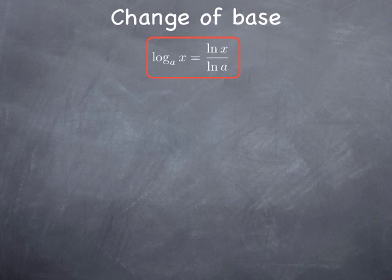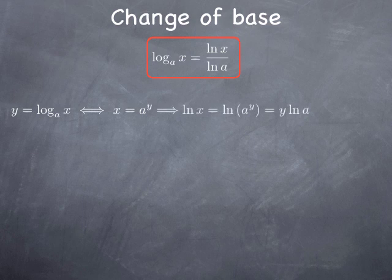Let me try to justify this. Let's start with the expression that y is the log of base a of x. What we want to do to establish the formula is to obtain y in terms of ln of x. First, we write what that means: the logarithm of base a is defined as the inverse of the exponential of base a, so that means x equals a to the y. Then, because I want to express that in terms of natural logs, I take the natural log on both sides, getting ln(x) = ln(a^y).